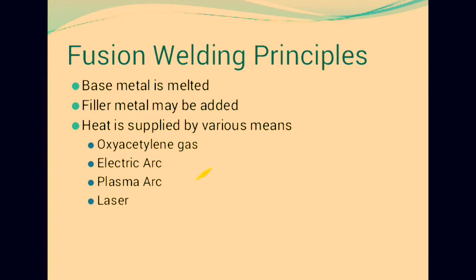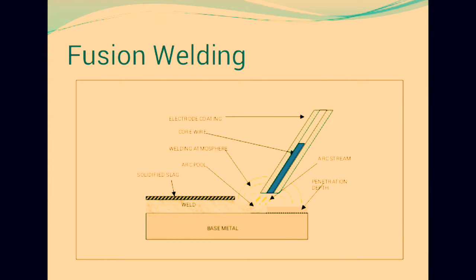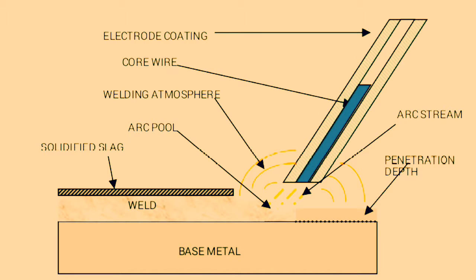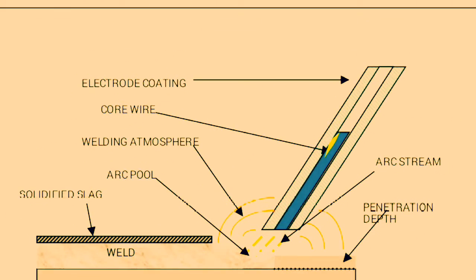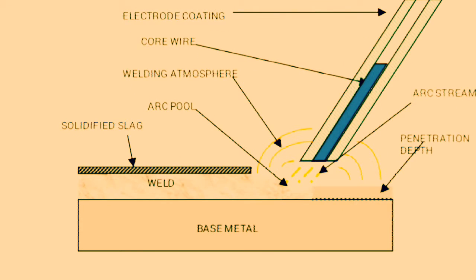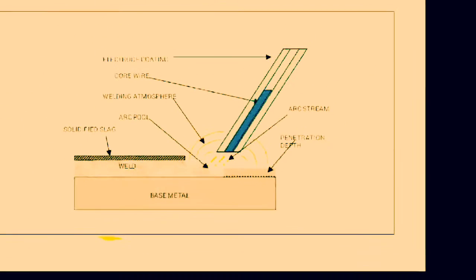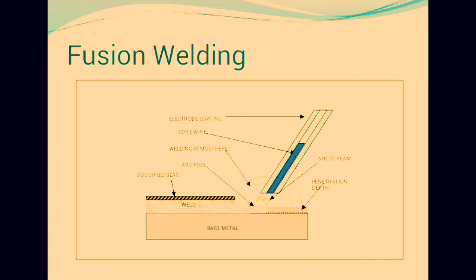We are using sources like oxyacetylene gas, electric arc, plasma arc, and laser for generating heat in fusion welding. This is the diagram of fusion welding showing the parts of the equipment, like the electrode coating, four wires inside, the base metal, solidifying slag, and penetration depth. These are the requirements and the diagram of fusion welding.